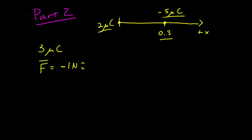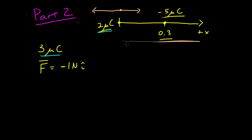So we'll first think about where this charge might be placed. This is a positive charge and we know it exerts a repulsive force on the two micro coulomb charge. The negative five micro coulombs charge exerted a force in the positive x direction, and now we want a force that's larger and points in the negative x direction so the net force is negative. Since the new charge is also positive, it has to be in the positive x direction to exert a repulsive force in the negative x direction.